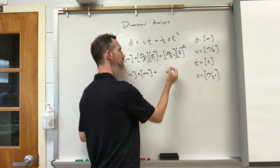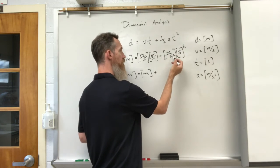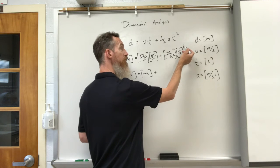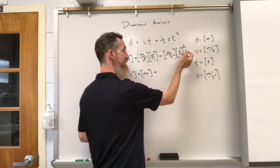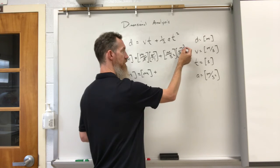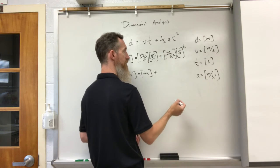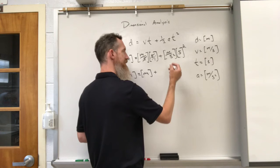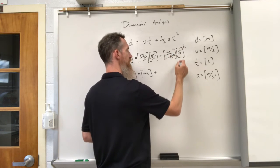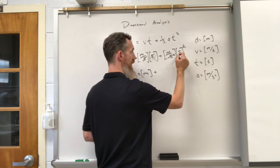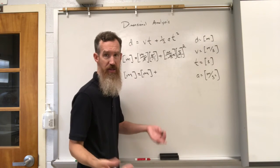Here we have meters over seconds squared. Here we have seconds, but it is also going to be squared. That seconds is going to be squared by the power there. And essentially what happens is this second squared is going to cancel out, because this again is over one. If it's not a fraction, you can make it into a fraction by putting it over one.